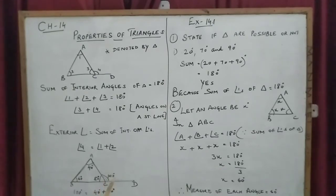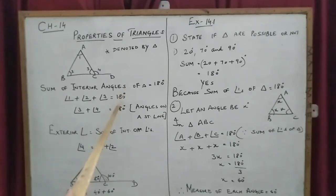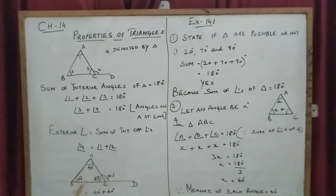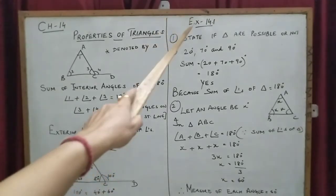Here is an example: 60 plus 40 plus 80 equals 180 degrees, confirming the triangle angle sum property. The exterior angle is 100 degrees, which equals 40 plus 60 — the sum of the two opposite interior angles. So the exterior angle equals the sum of the two opposite interior angles.